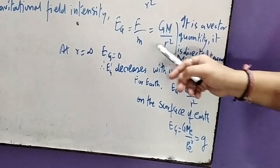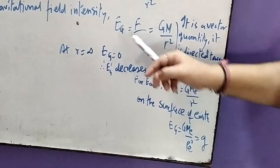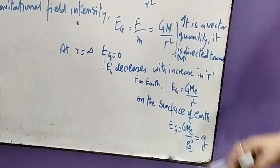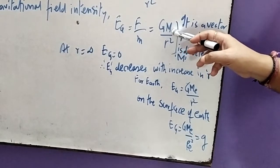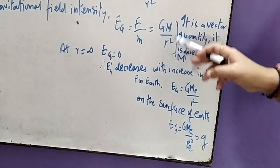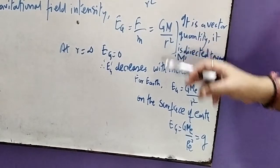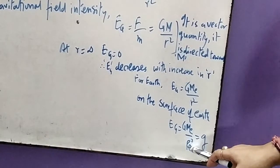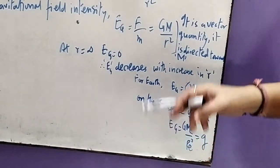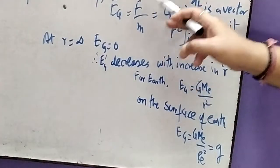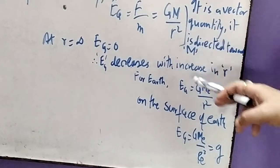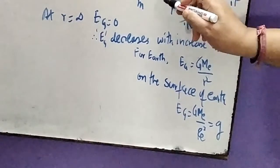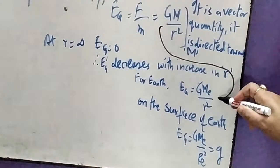As the mass M increases, G·M decreases. On the surface of the Earth, R becomes capital R_E, so the intensity becomes G·M upon R_E squared. For the Earth, in this formula M is the mass of the Earth. On the surface of Earth, small R becomes capital R_E.